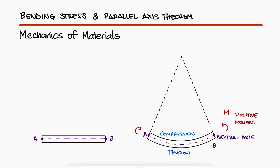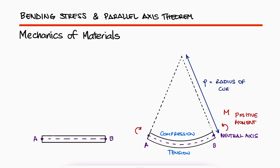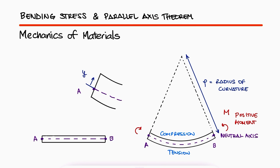The radius of curvature of a deformed beam is the radius from the center to the neutral axis. The neutral axis will serve as a point of reference for the distances in the y direction. The distance from the center of the radius of curvature to the plane that is found in compression would therefore be rho minus y.